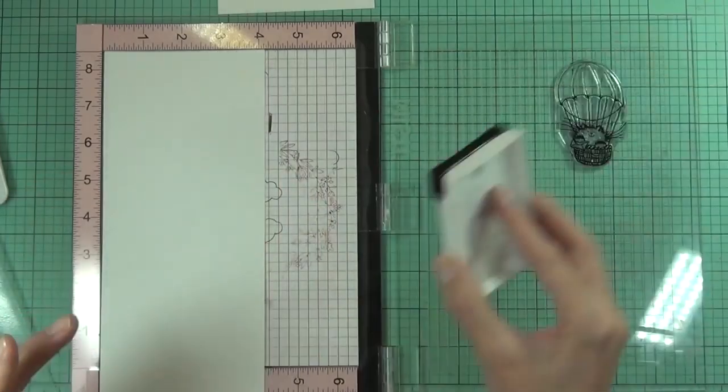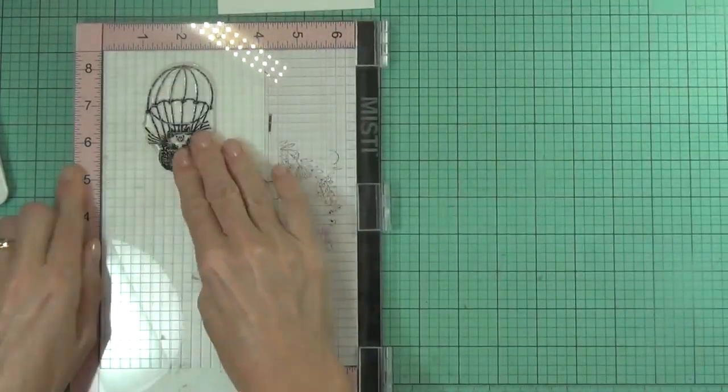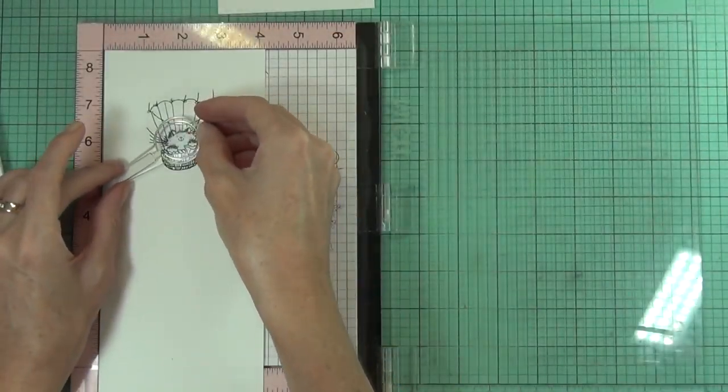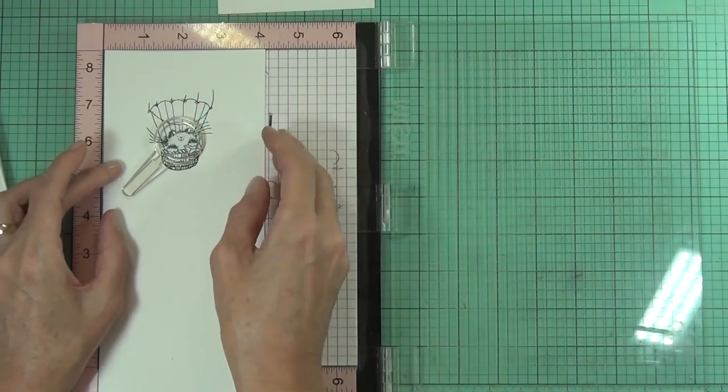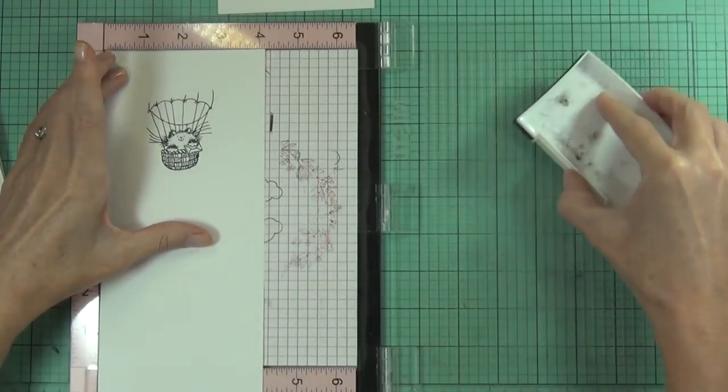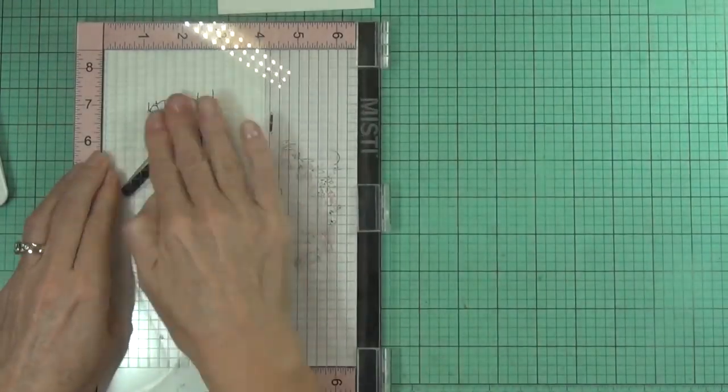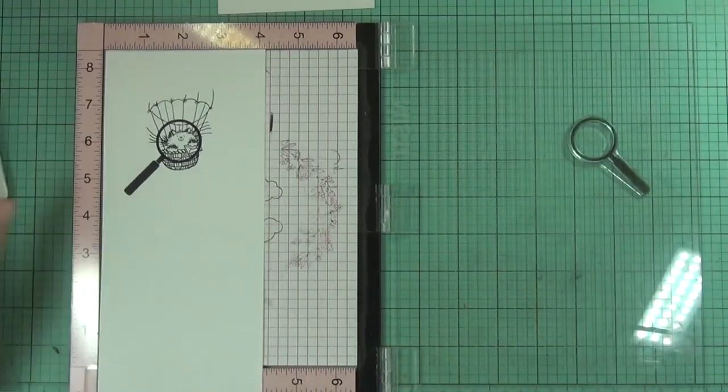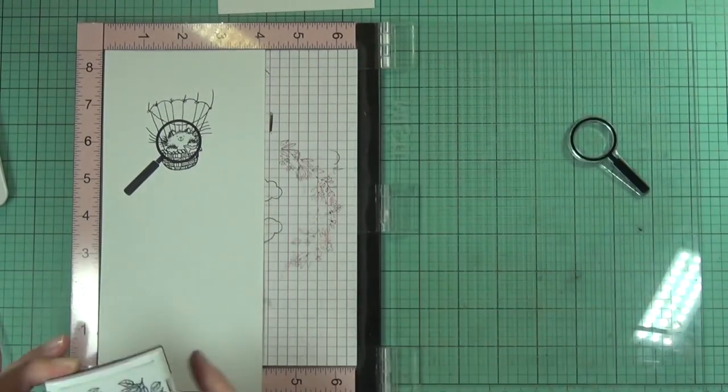Now for something a little bit different. These are some of the critter stamps which I just adore from Penny Black. This set's called Happy Critters and I've got a couple of images from this set that I'm using today. I've stamped it on the front of a top fold card and stamped it a second time on some scrap cardstock.